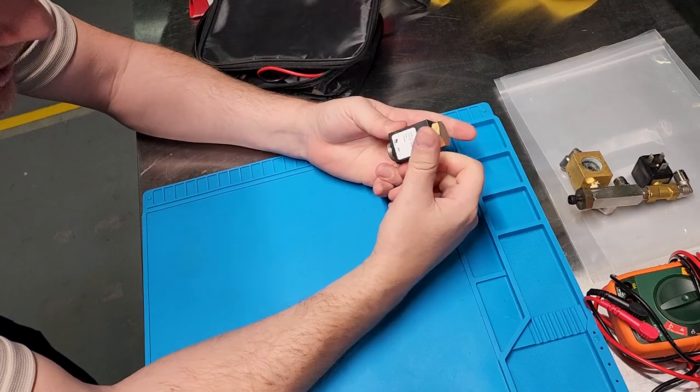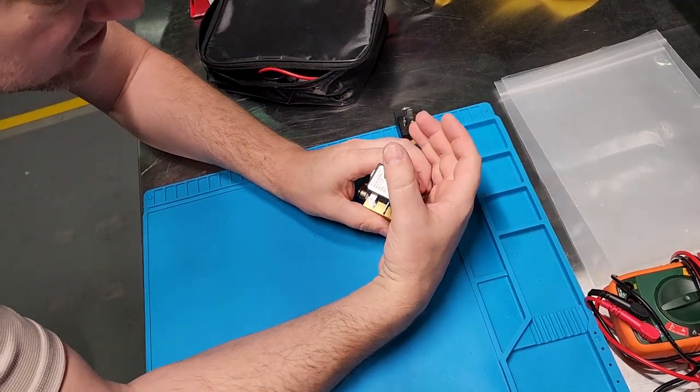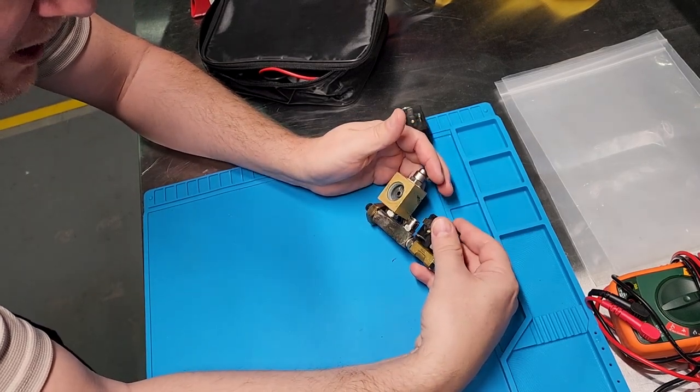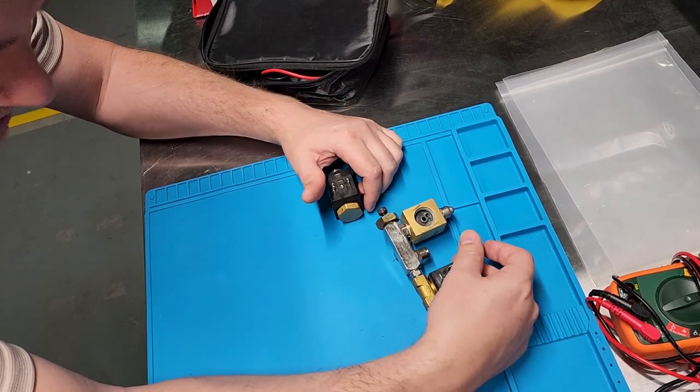So this right here is the solenoid that I was saying was arcing internally. It's a 115 volt mains solenoid, and so is this little guy right here. They just have different capacities when it comes to valving, so that's the only real difference. They should electrically be almost identical.